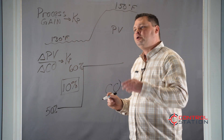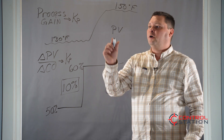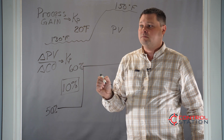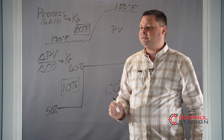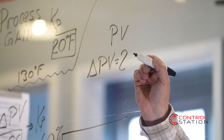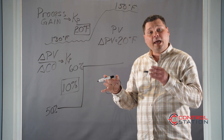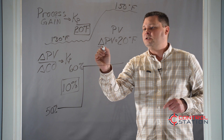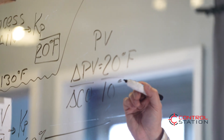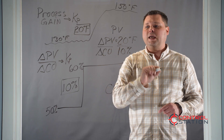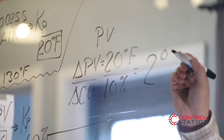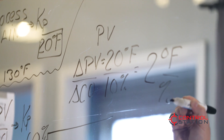In this example the process variable goes from 130 to 150, which is a change of 20 degrees Fahrenheit — our delta PV is 20 degrees F. We divide that by the change in the controller output, which is 10 percent. So 20 divided by 10 gives us 2 degrees Fahrenheit per percent CO.